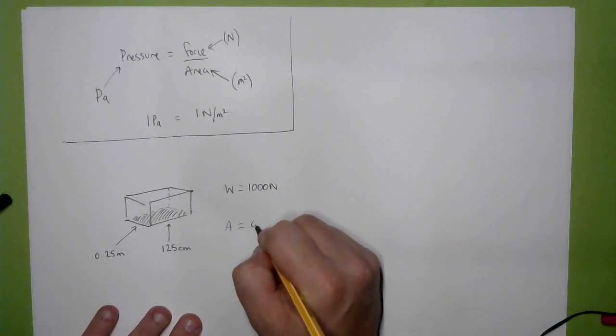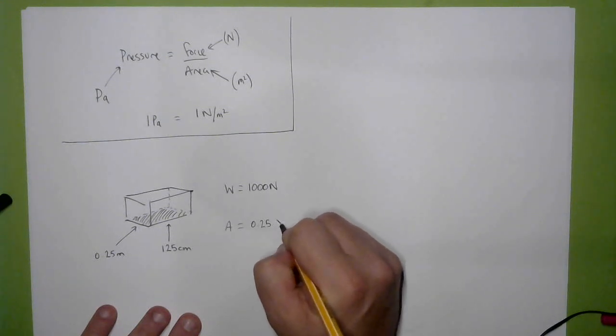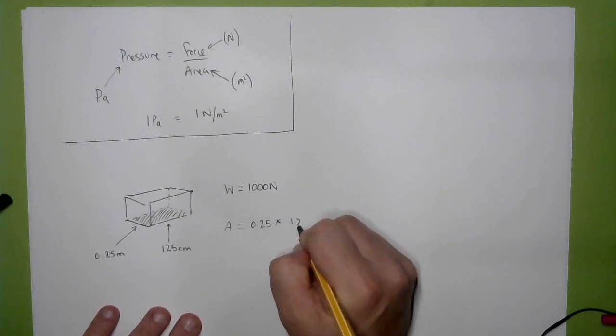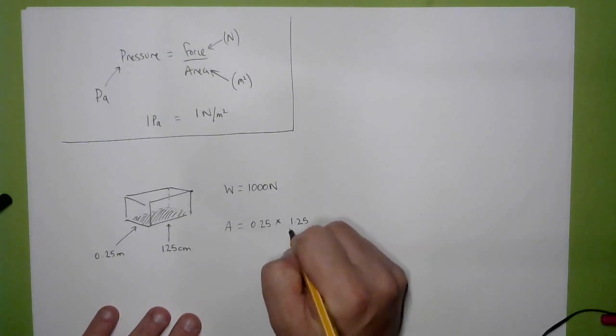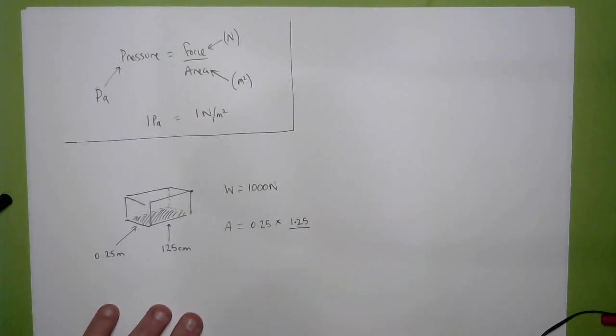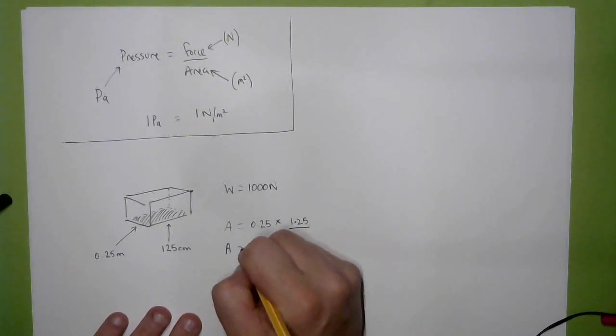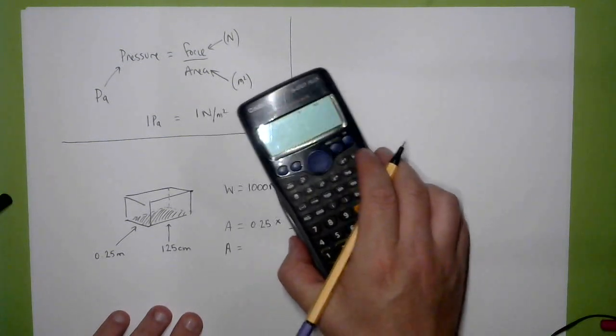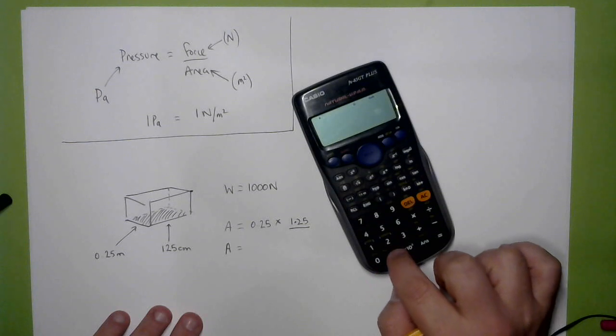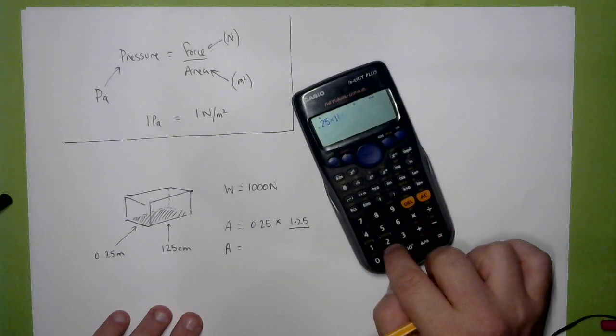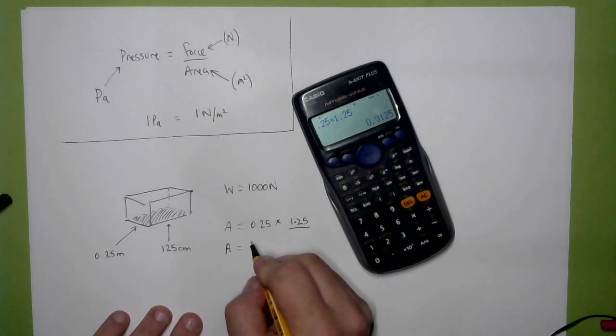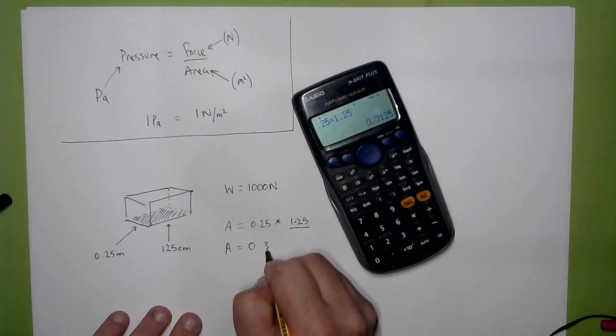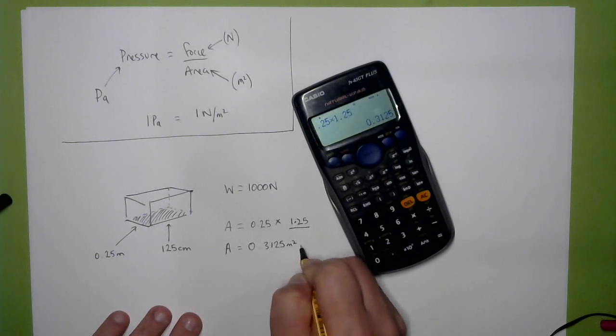So the area is 0.25 multiplied by 1.25. So you need to be really careful to make sure that all your quantities are in metres. In this case, I'll bring that so you can see it, 0.25 times 1.25 is 0.3125 square metres.